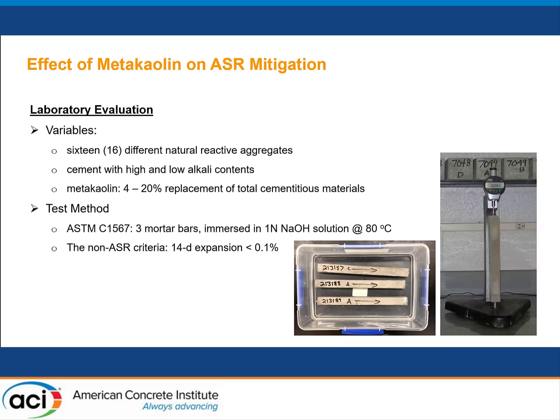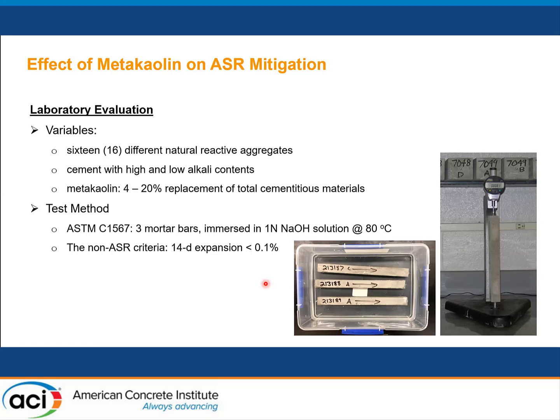In the current study, we selected 16 different natural reactive aggregates, and we selected two different cements with high and low alkaline contents. The MetaKaolin dosage we selected ranges from 4 to 20%. We do the length change measurements as normally people do, and for each study we prepare three mortar bars, as shown in this table.